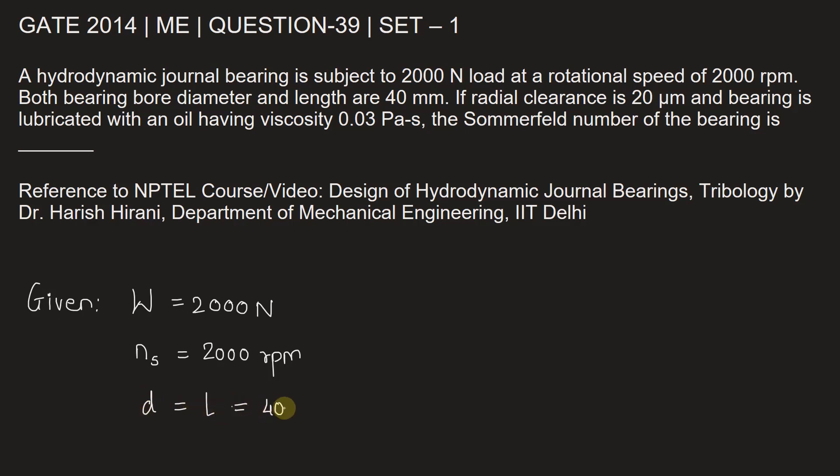length L equals 40 millimeters. Radial clearance c is given as 20 micrometers. Bearing is lubricated with an oil, viscosity μ of that oil is 0.03 Pascal-second. We need to find the Sommerfeld number. Let's see how